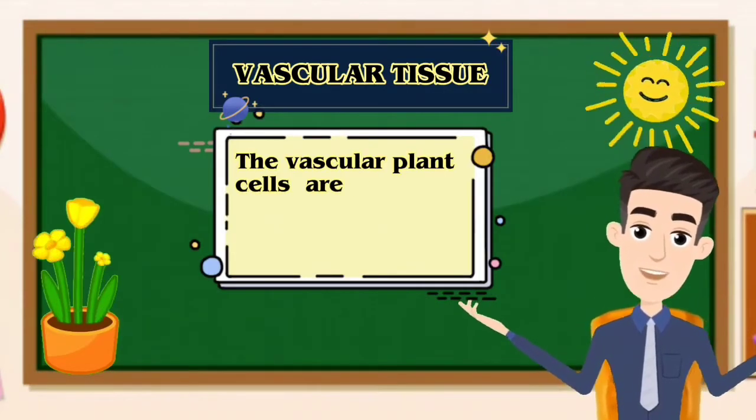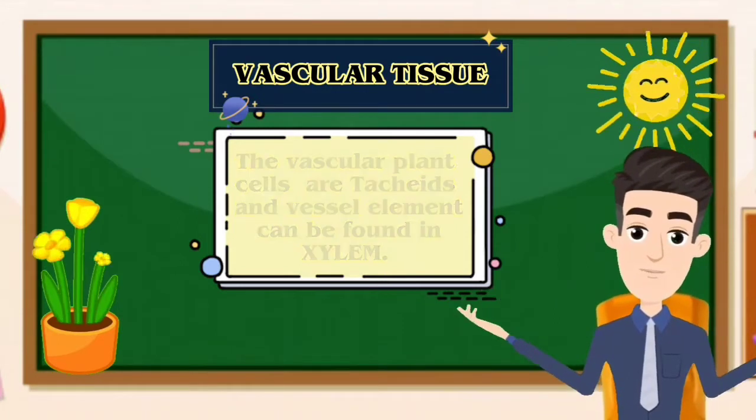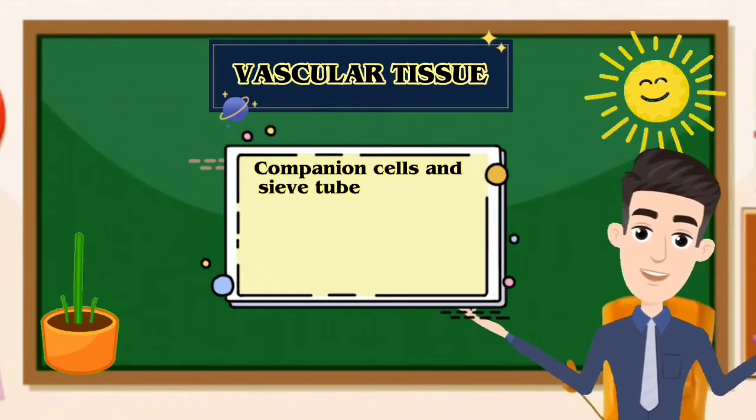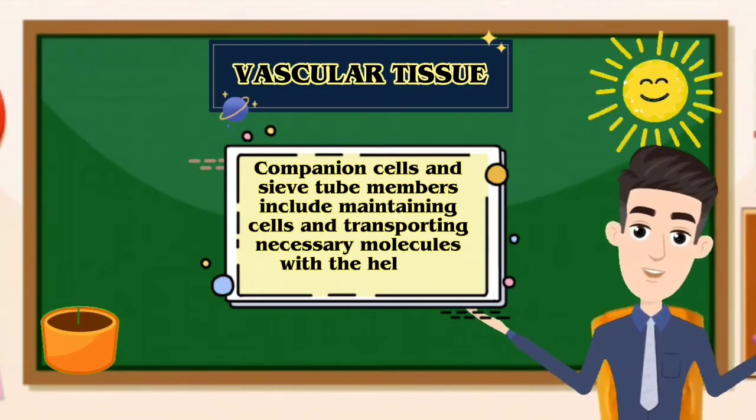The vascular plant cells are tracheids and vessel elements, which can be found in xylem. Companion cells and sieve tube members include maintaining cells and transporting necessary molecules with the help of companion cells.